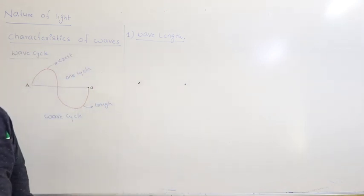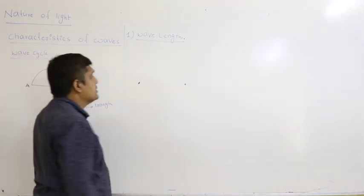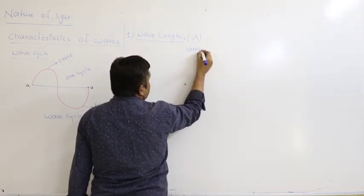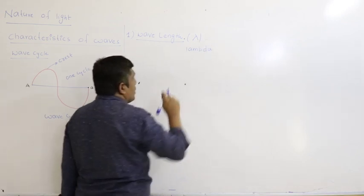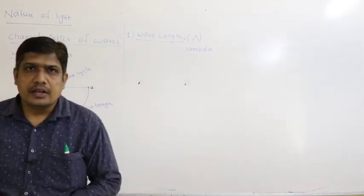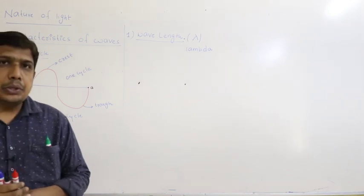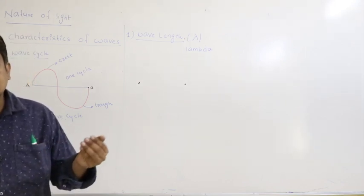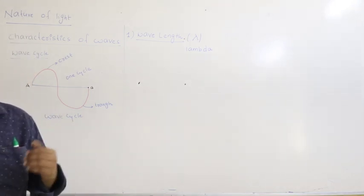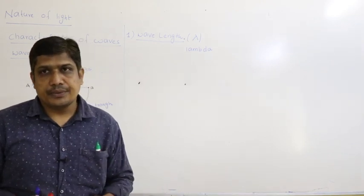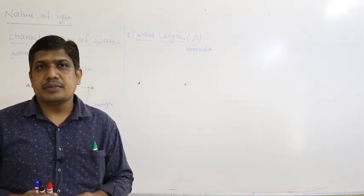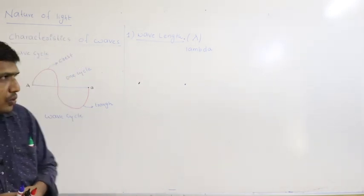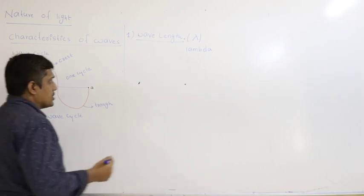Wavelength is represented by the letter lambda (λ). It is defined as the distance between two successive or consecutive crests, or two successive troughs. Alternatively, it is the distance between two points present in the same phase of a wave. The best definition is two successive crests or troughs.